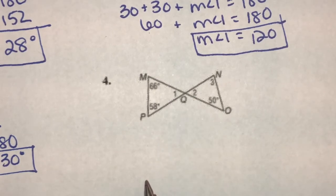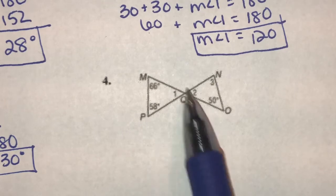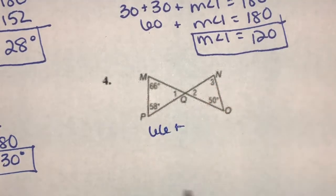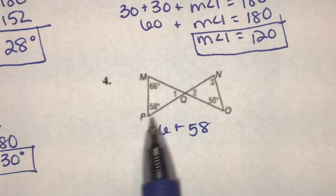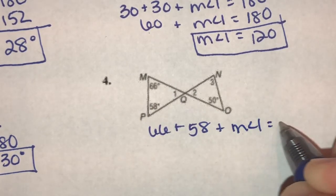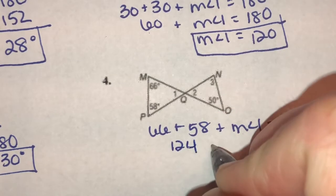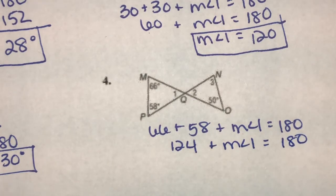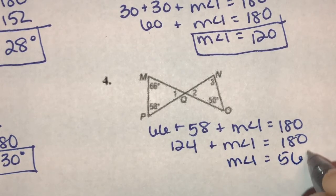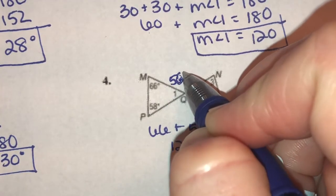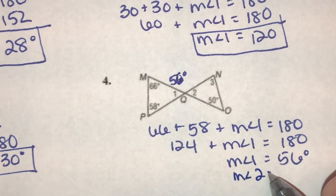Here we want angles one and two. For angle one, this is a bow tie, so they should be the same. The angle up here is 66, this guy down here is 58, and angle one with them all three have to add up to 180. 66 and 58 is 124. 124 plus whatever angle one is equals 180. Subtract 124 from 180 and we get 56. So the measure of angle one is 56 degrees. Angle two is vertical to that, so the measure of angle two has to be exactly the same.